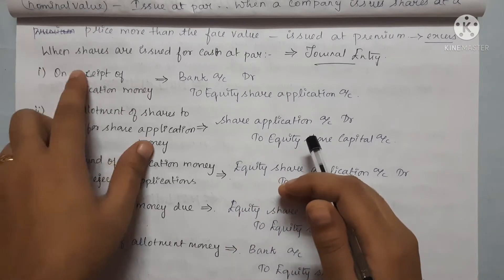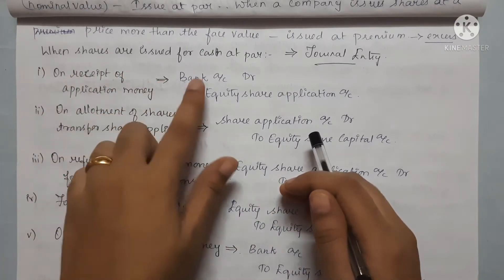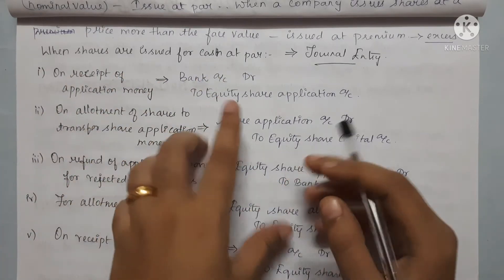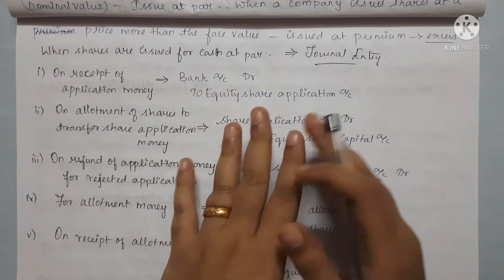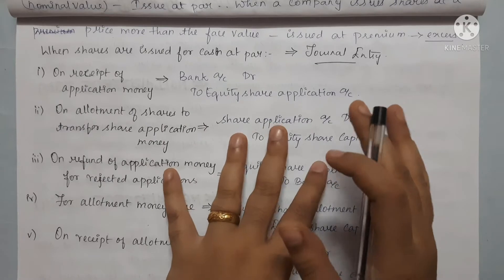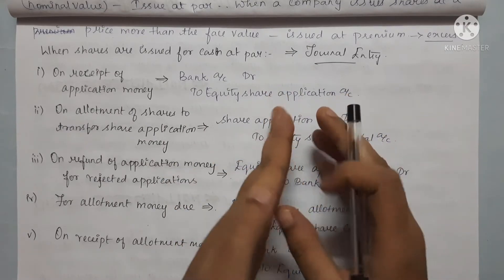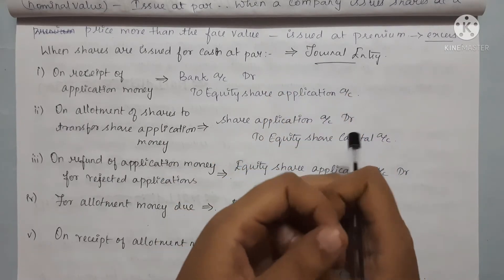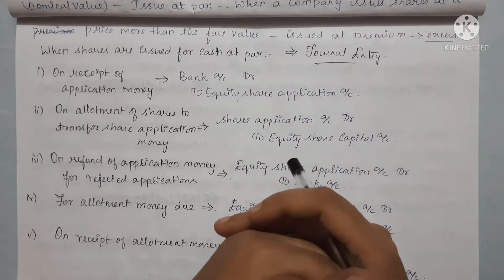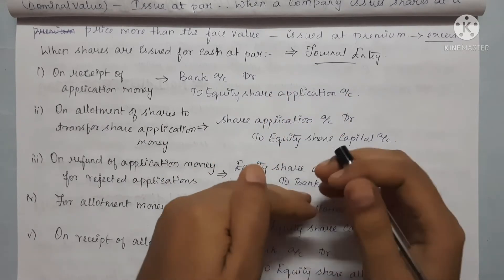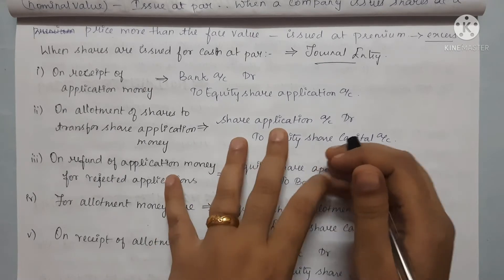Next we will see when shares are issued for cash at par — the share issue at par value, face value. We will see what transactions and what journal entries we will record.